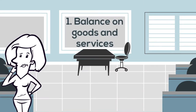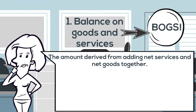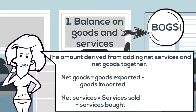The balance on goods and services, commonly known as the BOGS, is the amount derived from adding net services and net goods together. The BOGS can also sometimes be referred to as the trade balance, because the trade that occurs from countries exporting and importing goods and services every day is recorded in this account.